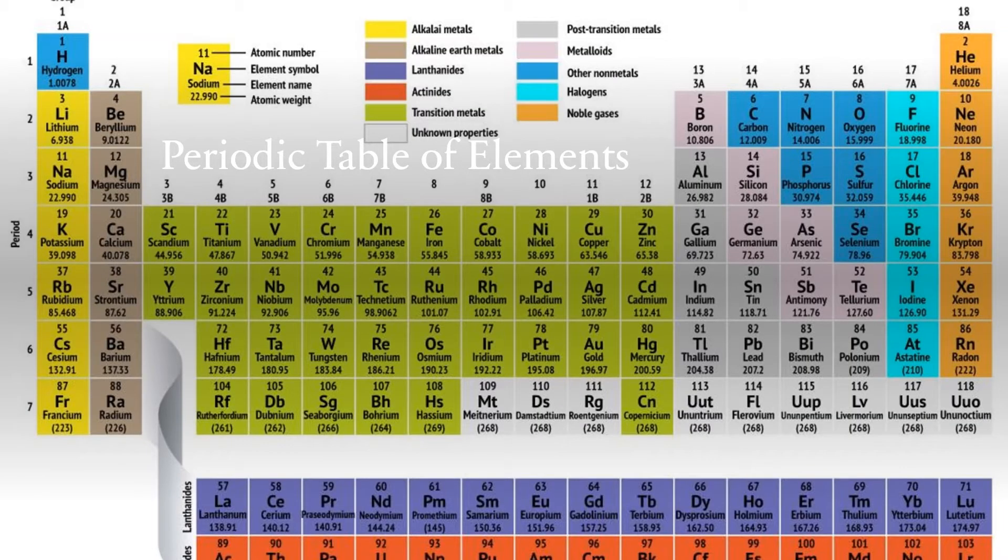Elements are arranged in what we call the periodic table. This periodic table is the list of all elements found in earth.